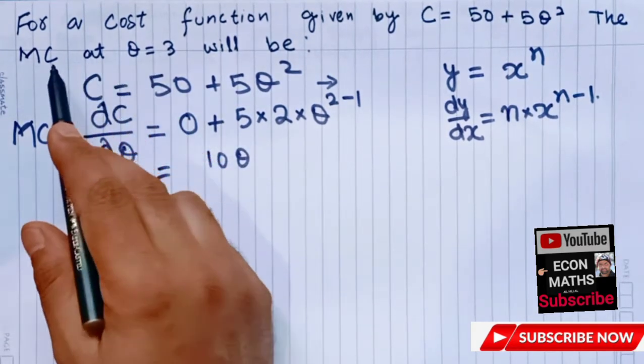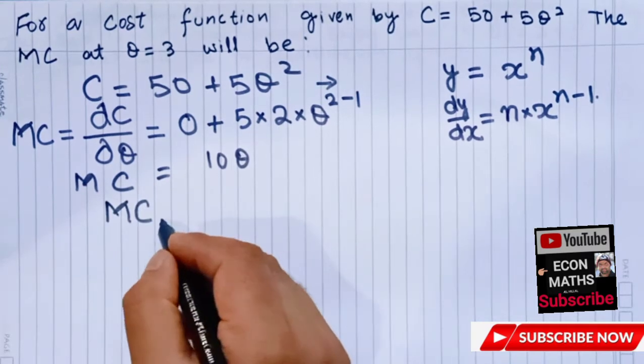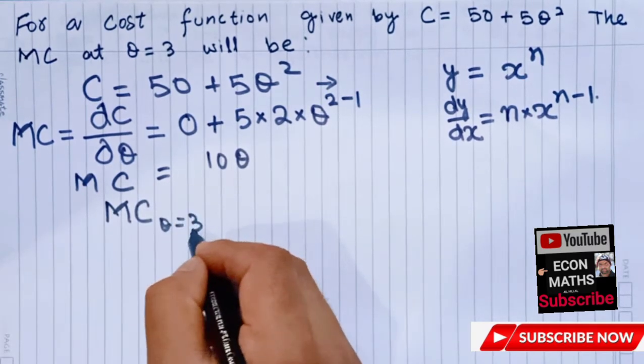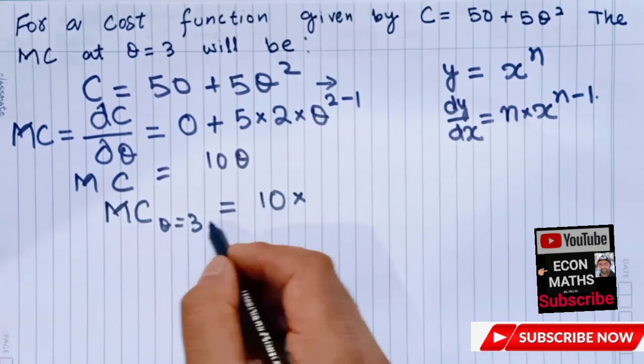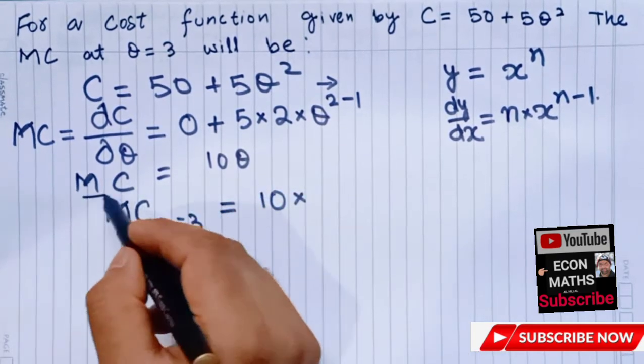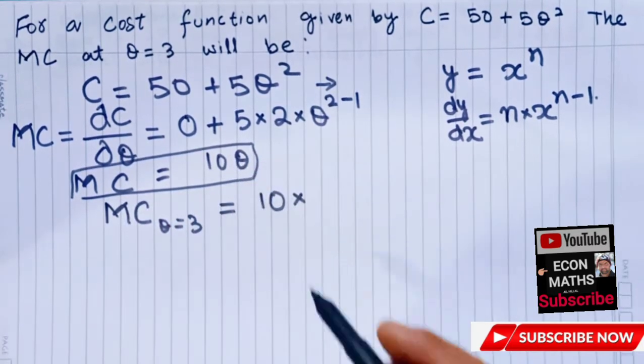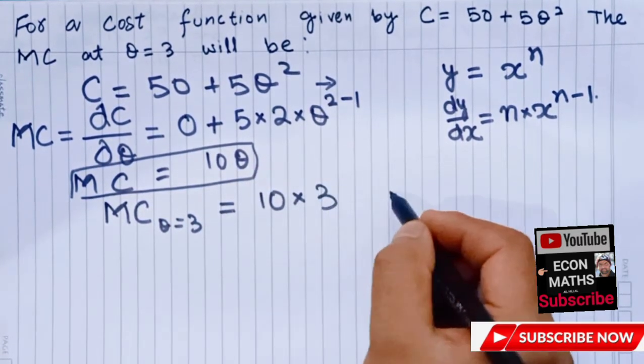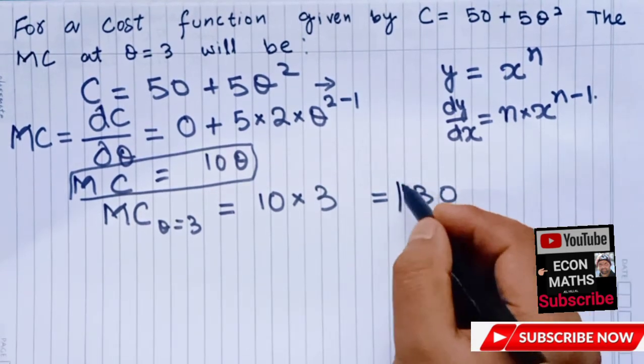Our MC is equal to 10Q. Now it says MC at Q equals 3, this means marginal cost when Q equals 3, which will be equal to 10 times the quantity. We have to put the value of Q in the marginal cost, here it is 3, so this becomes 30. The option will be 30.